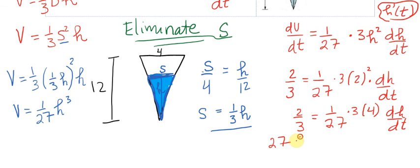Dividing by 12 here equals dh/dt. Work out all this arithmetic. Let's see if I can do this: the 27 and the 3 cancel and you have a 9, the 2 and the 12 cancel and we have a 6.